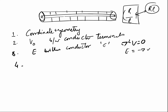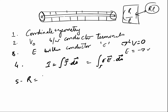The fourth step is to find the total current I = ∫J·dS, where J = sigma·E, using the electric field found in the third step. The fifth step is to find the resistance R = V₀/I. Using these five steps we can calculate the total resistance of any conductor.